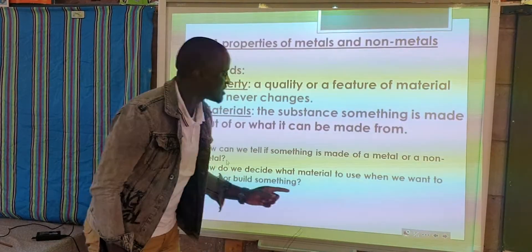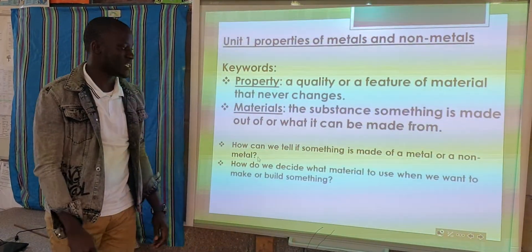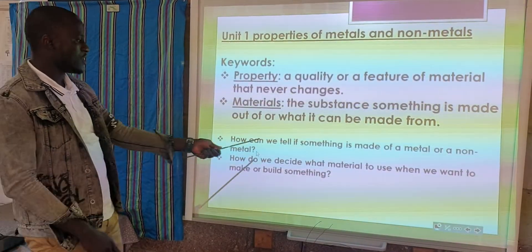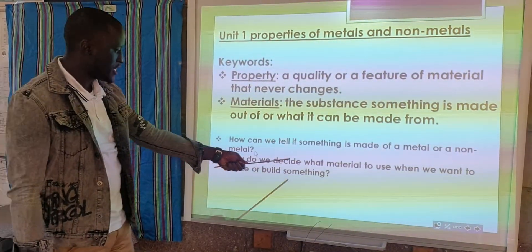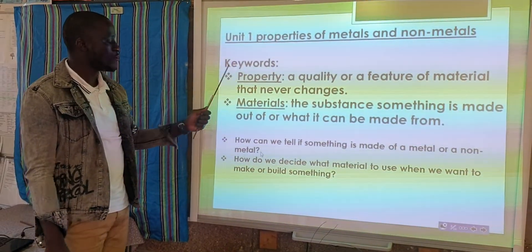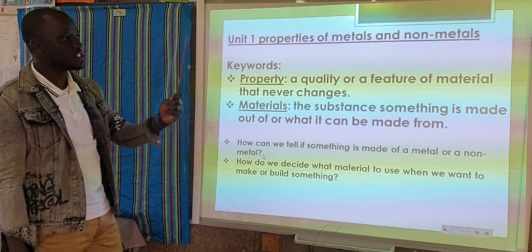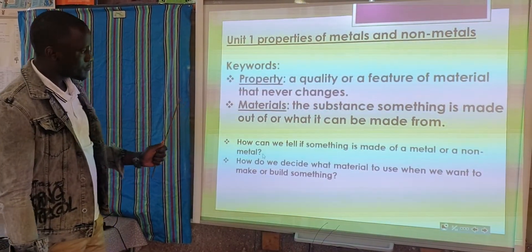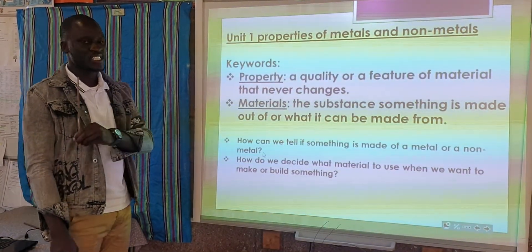The same applies to metals and non-metals. We need to know the properties of metals and the properties of non-metals. That takes us to the questions: how can we tell if something is made out of metal or another material? And how do we decide what material to use when we want to make or build something? Every material has its own property that makes it unique, and materials have different properties.